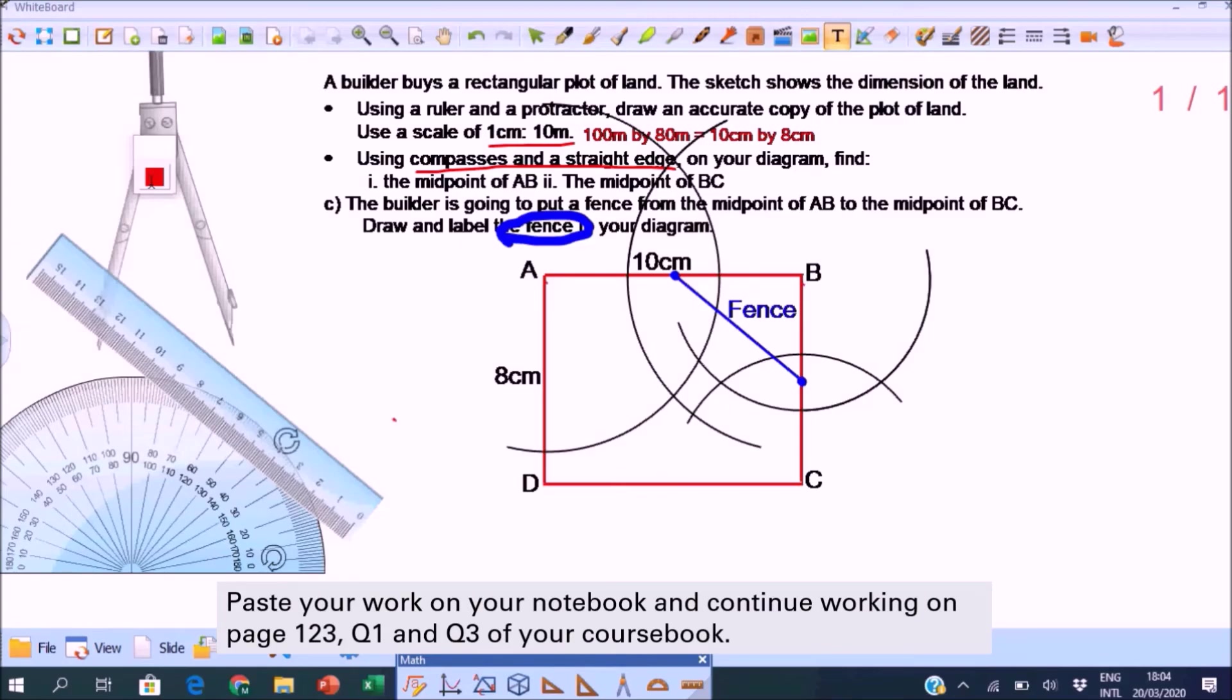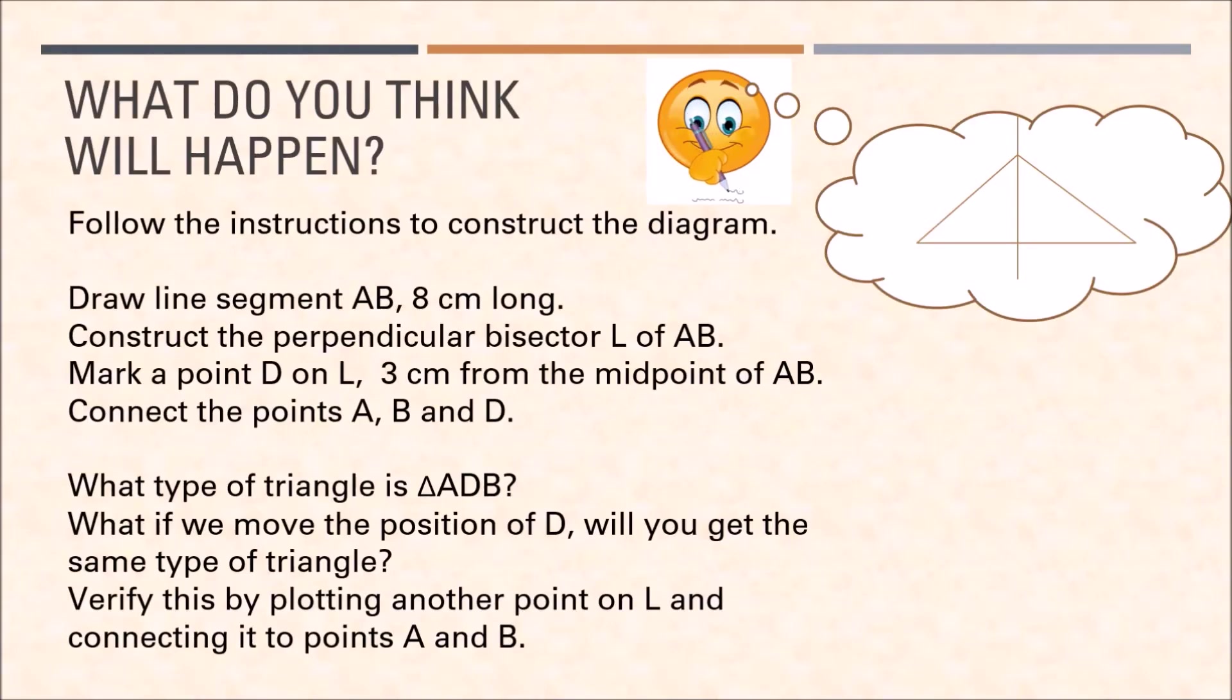Let's take a look at the next example. What do you think will happen? On A4 sheet of paper, construct an accurate copy of the diagram. Follow the steps that are given. In here, you will discover what type of triangle is formed when we connect points A and B to any point on the perpendicular bisector. Pause this video and come back when you are done working on it.